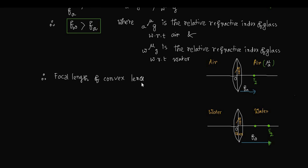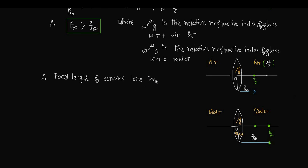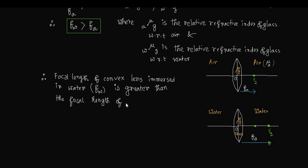Since Fw > Fa, the focal length of the convex lens immersed in water (Fw) is greater than the focal length of the same convex lens placed in air (Fa).